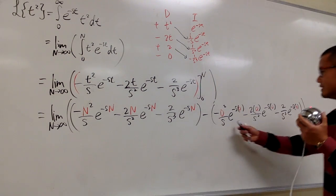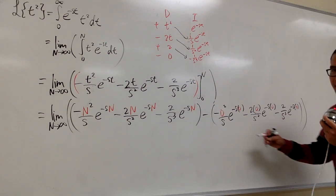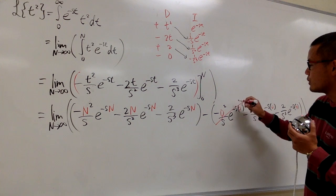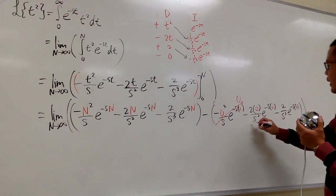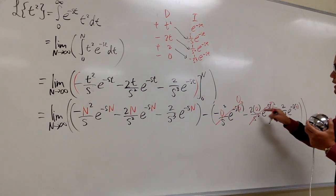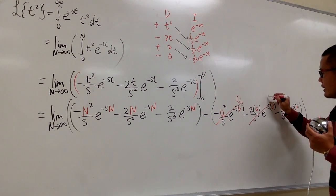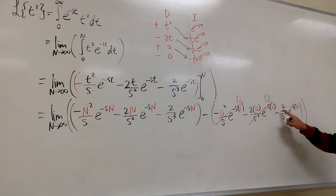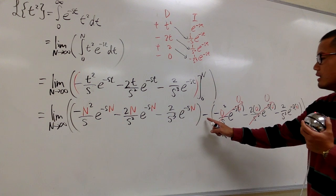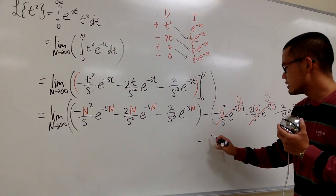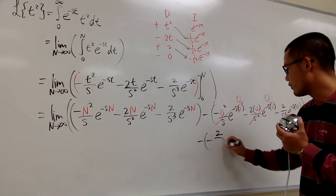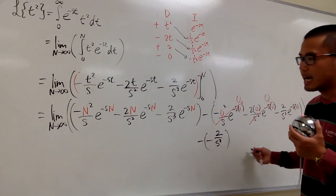The second part — plugging in t equals 0 — is easy. The first two terms vanish because of the 0 factors, and e to 0 equals 1, so we are left with just negative 2 over s cubed for the lower bound part. So the second part simplifies to minus of negative 2 over s cubed.